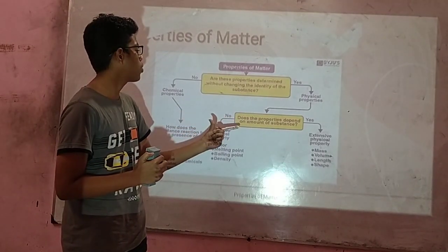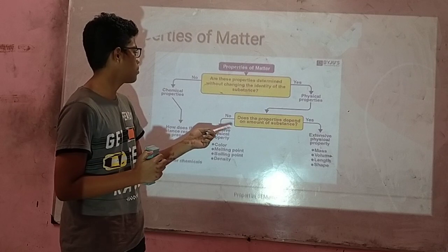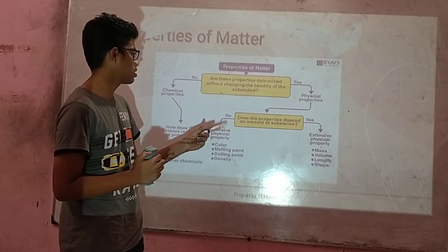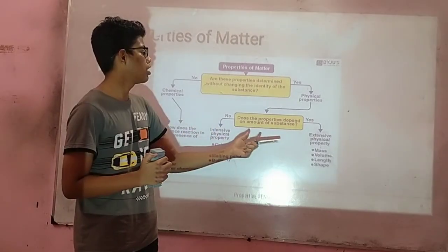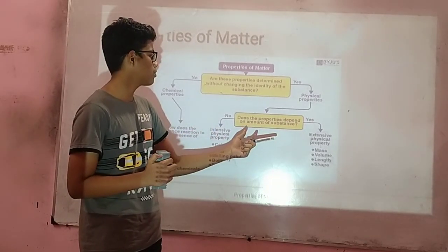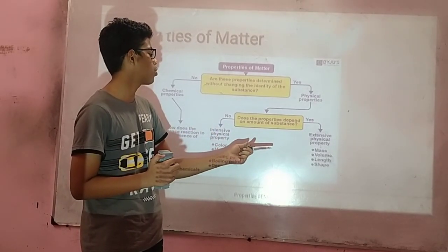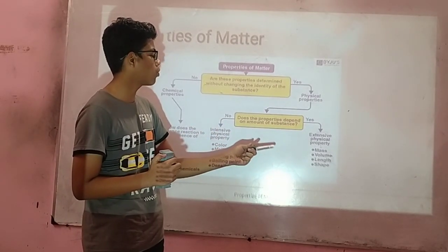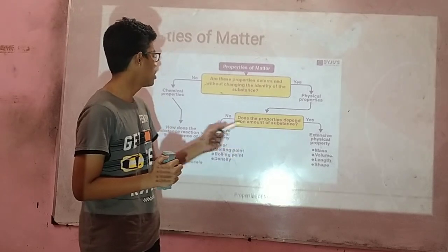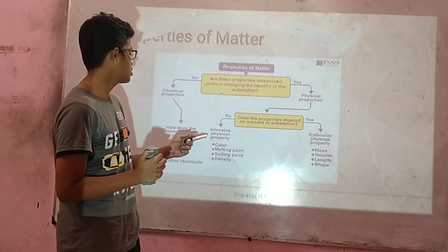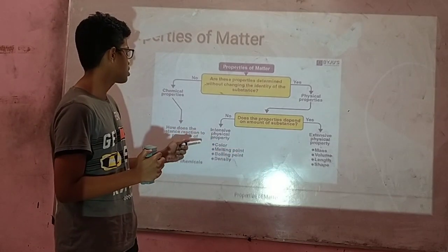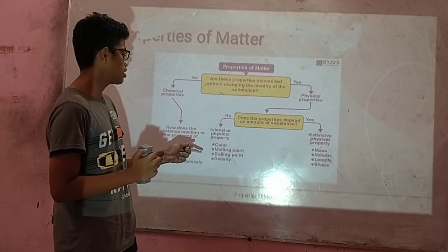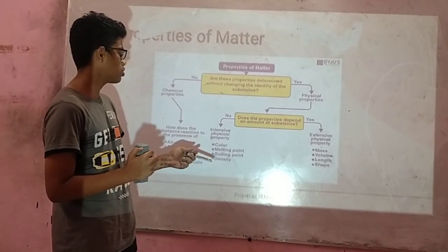Do the properties depend upon the amount of substance? If yes, it is an extensive physical property — such as mass, volume, and shape. If no, then it is an intensive physical property — such as color, melting point, boiling point, or density.